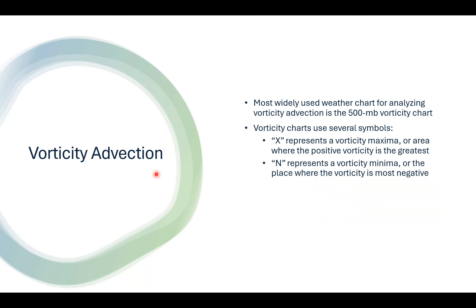There are three types of vorticity advection we'll talk about today: positive vorticity advection, negative vorticity advection, and neutral vorticity advection, and how vorticity advection impacts our vertical air motion. It's most widely used on the 500 millibar vorticity chart. I was going through some of my hand analysis weather charts from the meteorology course and I have some nice examples on those hand analyses of the 500 millibar vorticity chart.